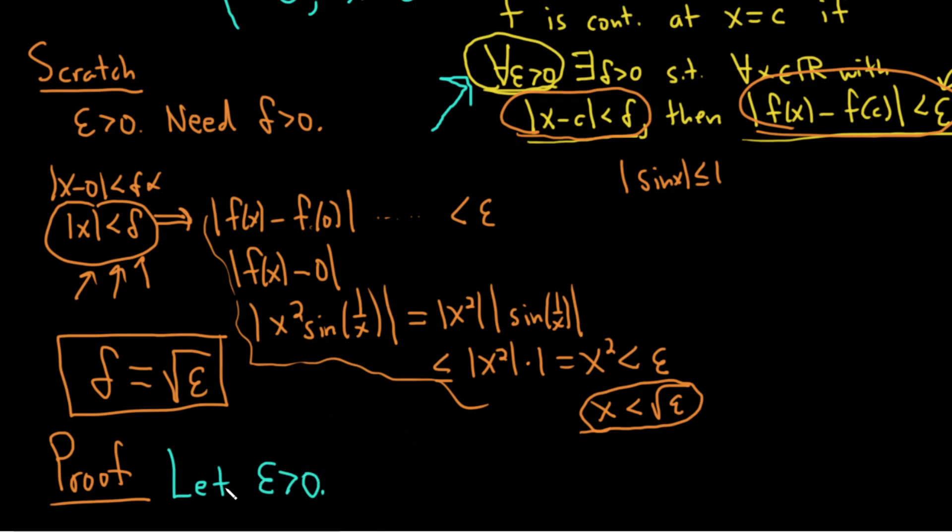You could say, you know, let epsilon greater than 0 be arbitrary. But it's kind of understood that it's just some epsilon. We're not really specifying what it is. So in theory, it could be any epsilon. Now we need to find a delta, which we've done in our scratch work. So we'll say choose delta equals the square root of epsilon.